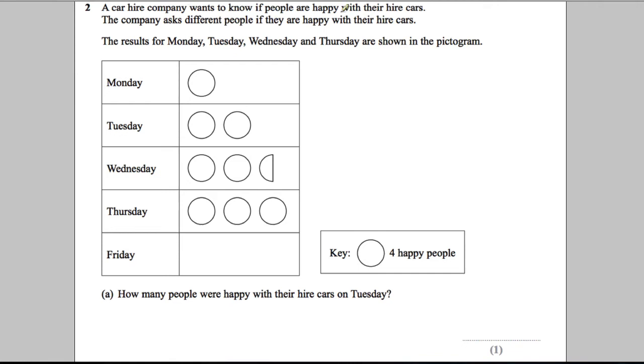Question 2, so make sure you get your highlighter out to highlight the key phrases. A car hire company wants to know if people are happy with their hire cars. The company asked different people if they're happy with their hire cars. The results for Monday, Tuesday, Wednesday, and Thursday are shown in the pictogram.